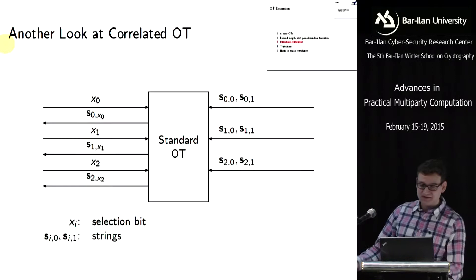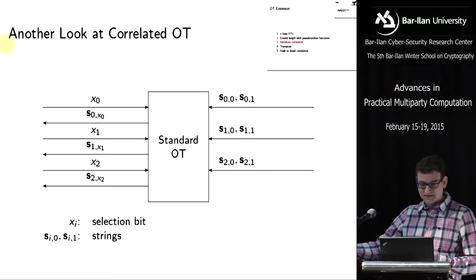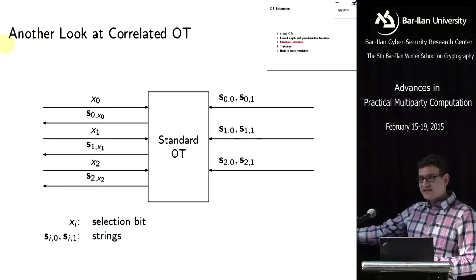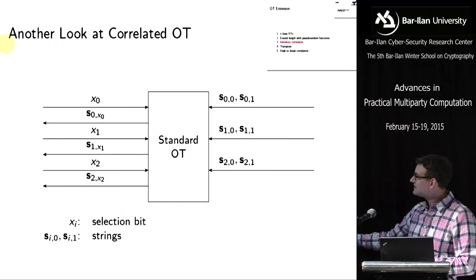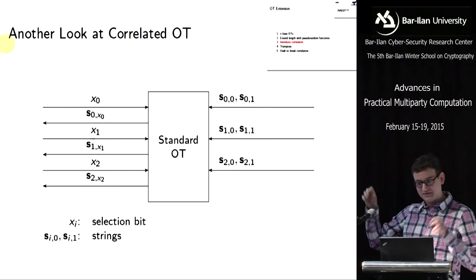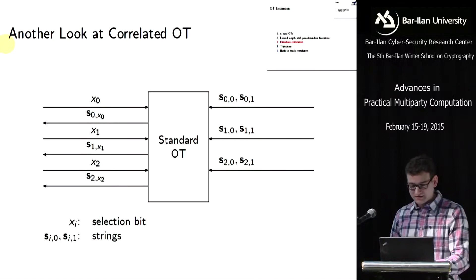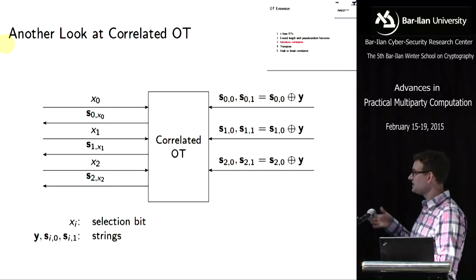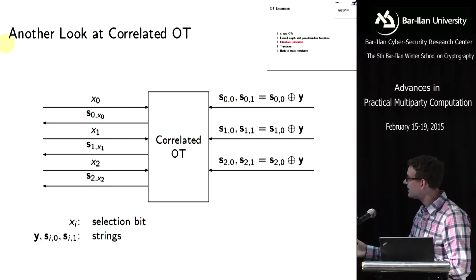This should be rather familiar: we have a standard OT box that provides several OTs. We have selection bits and two input strings on the right-hand side, because in the extended OT the sender of the base OT is going to be the receiver. So whenever I say receiver here, it's going to be the receiver of the extended OT. The receiver inputs two strings, there's a selection bit, and the sender at least in the base OT gets an output.